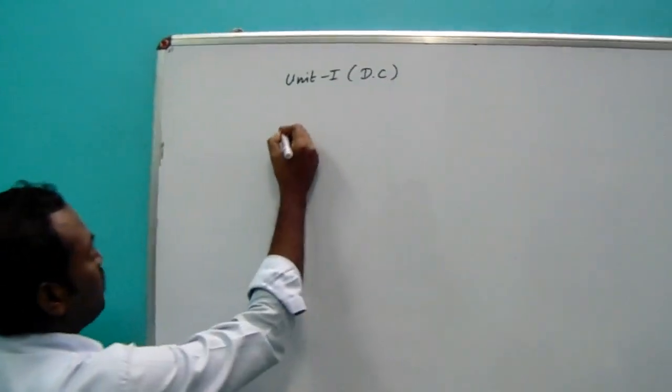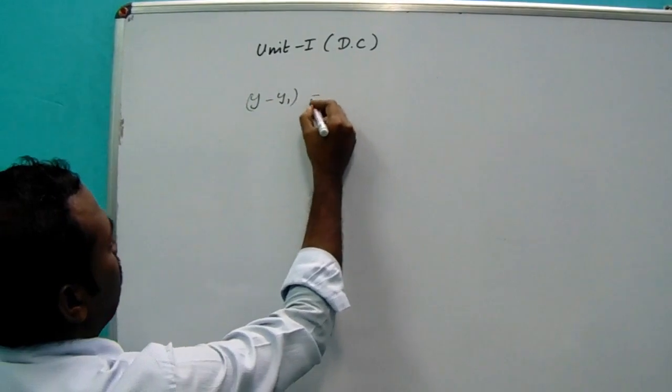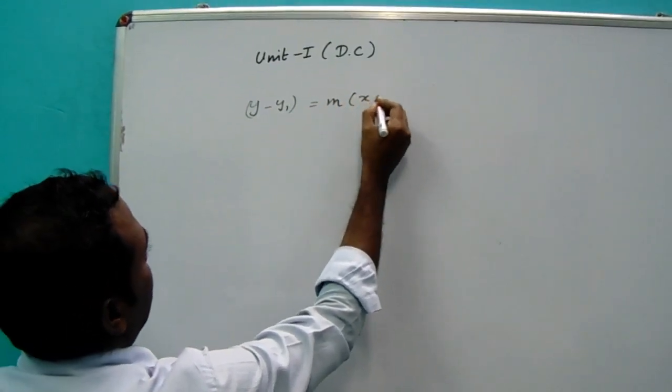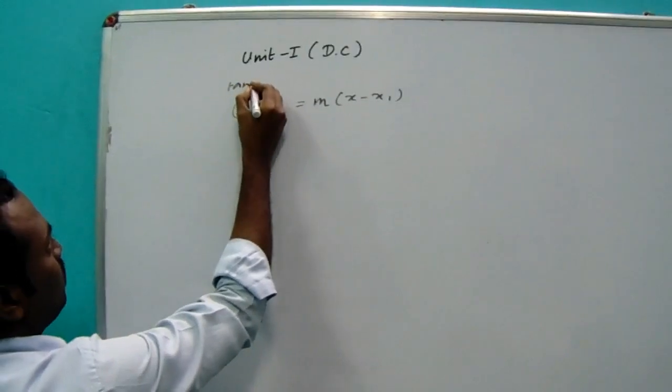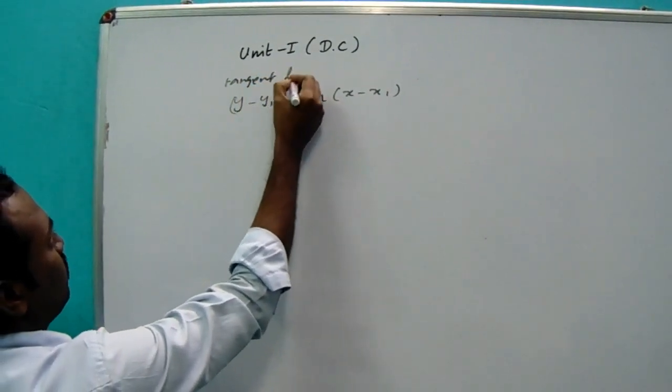What is tangent line? y minus y1, M is x minus x1. This is the formula for tangent line.